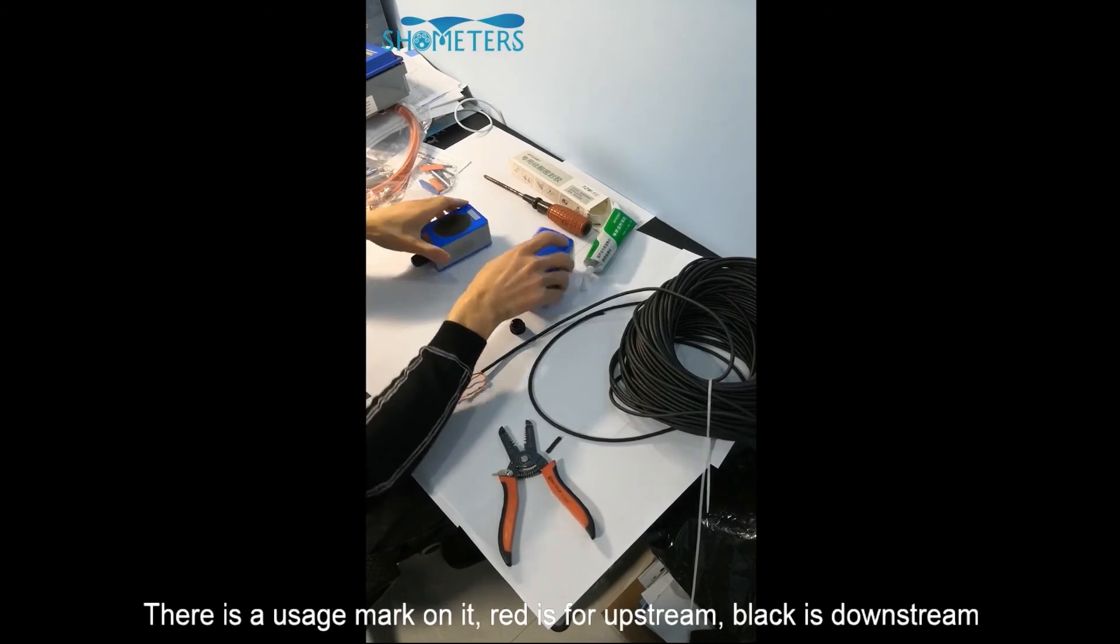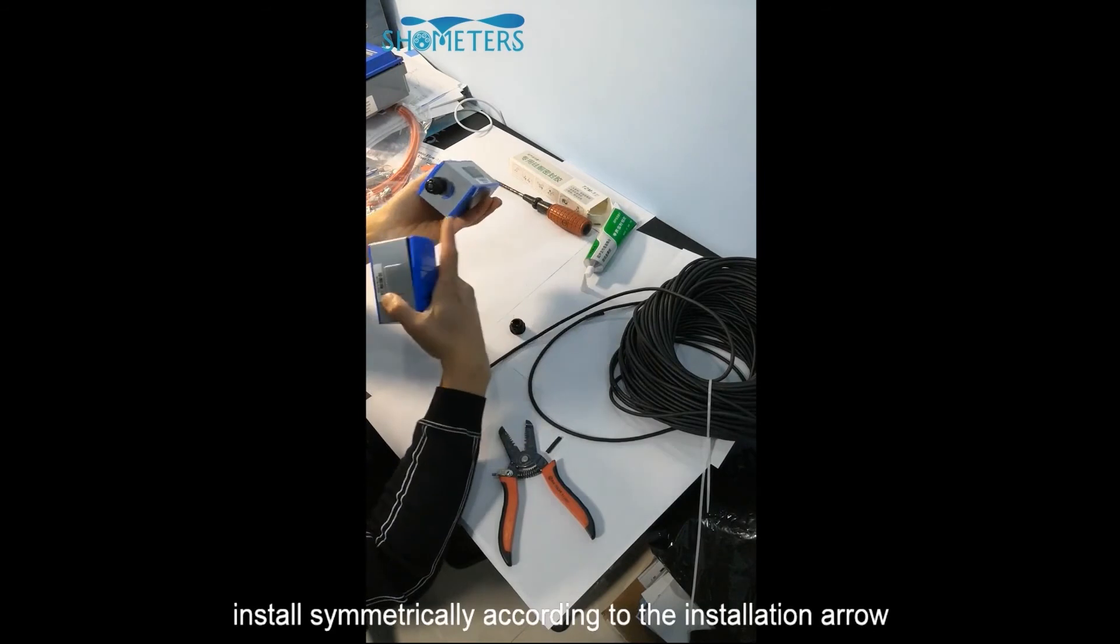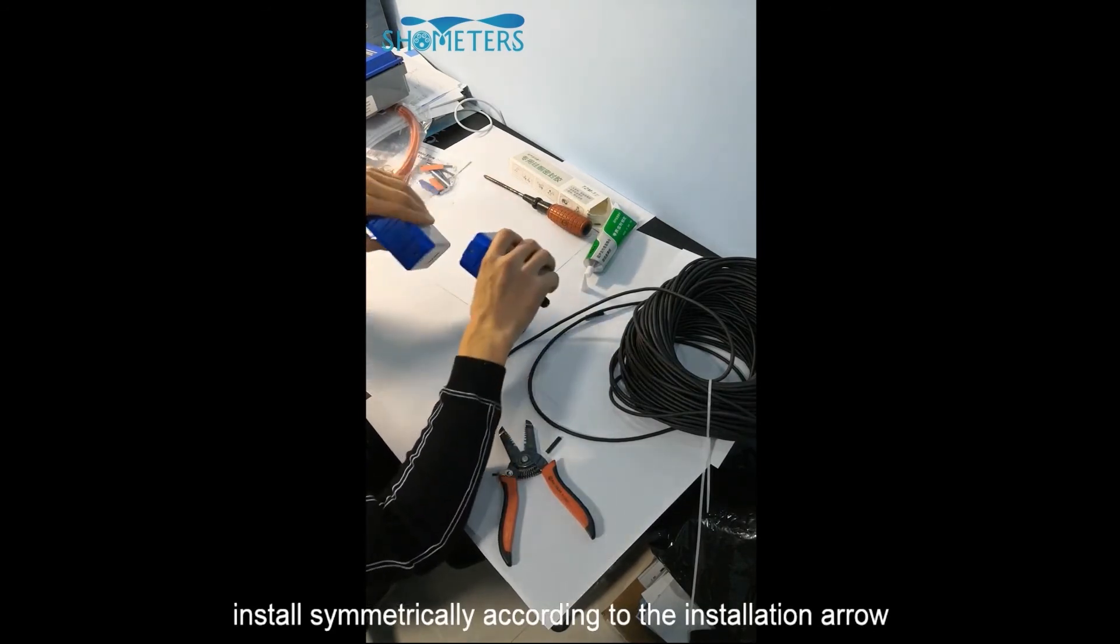Installation of the sensors. There is a usage mark on it. Red is for upstream, black is downstream. Install symmetrically according to the installation arrow.